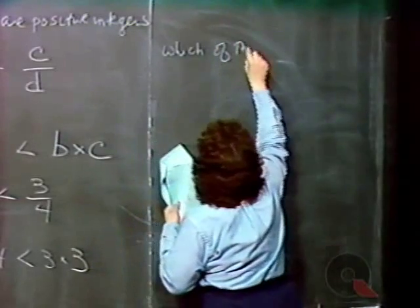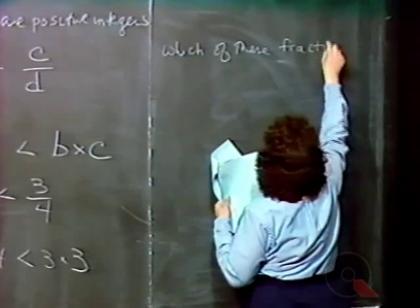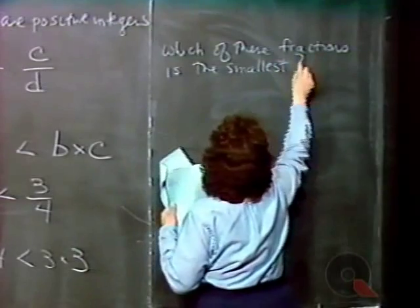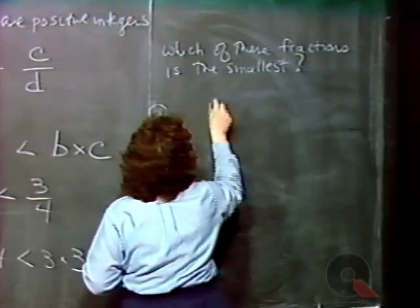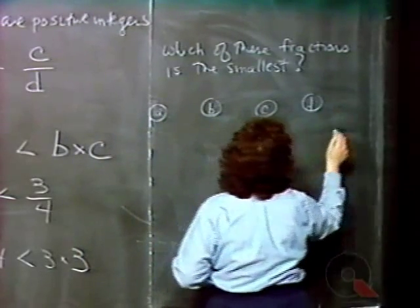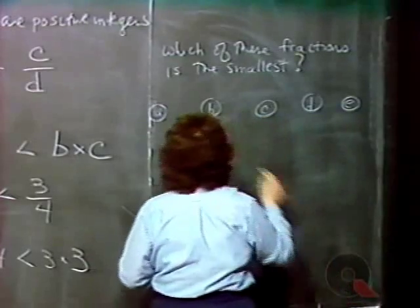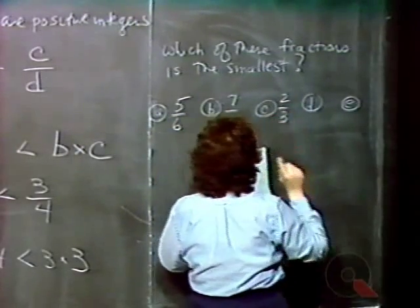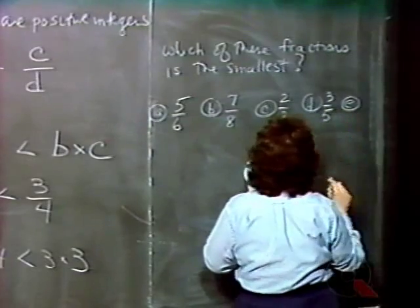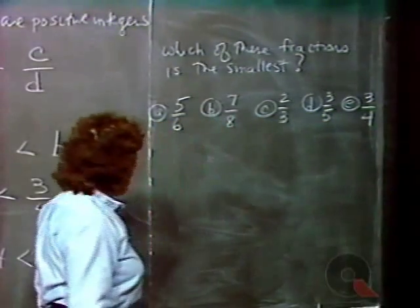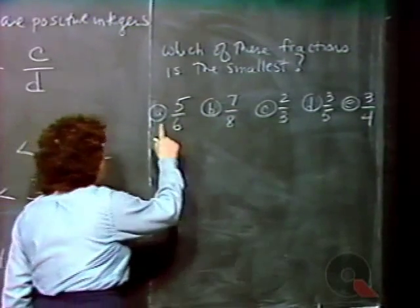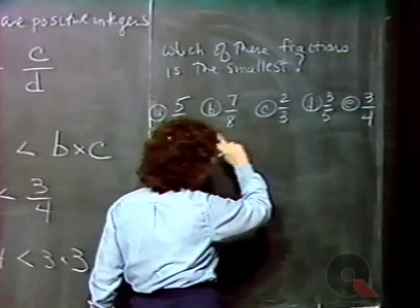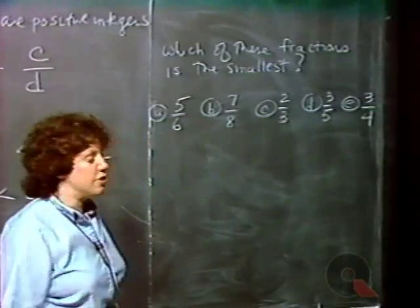Which of these fractions is the smallest? A: five-sixths. B: seven-eighths. C: two-thirds. D: three-fifths. E: three-quarters. What we're going to do is compare A with B, find the smaller of these two, then take that result and compare it to C, and so on down the line — until we find the smallest of the five fractions.